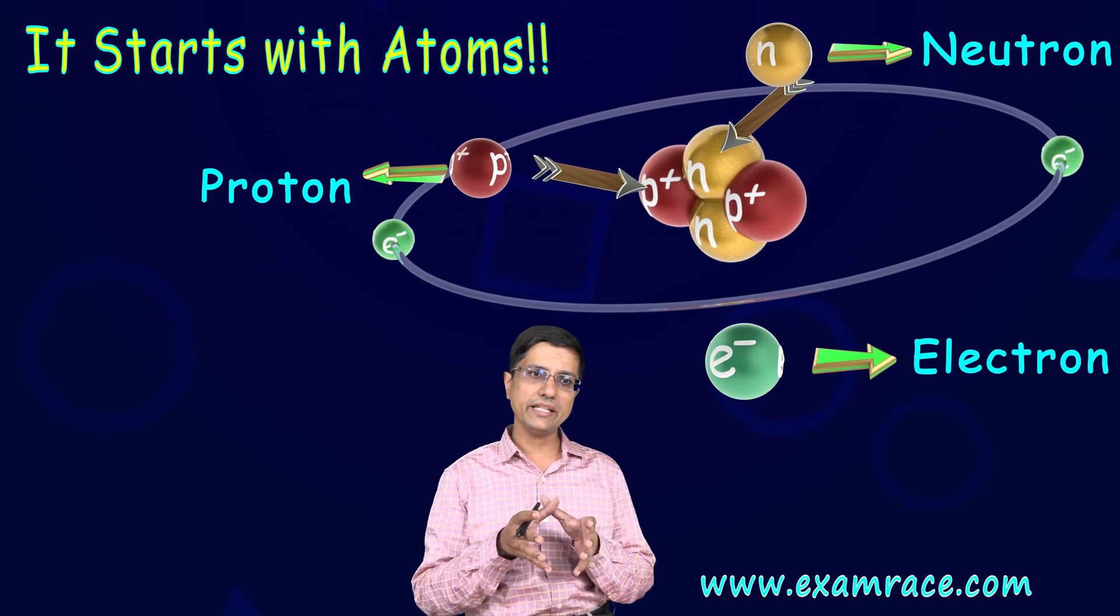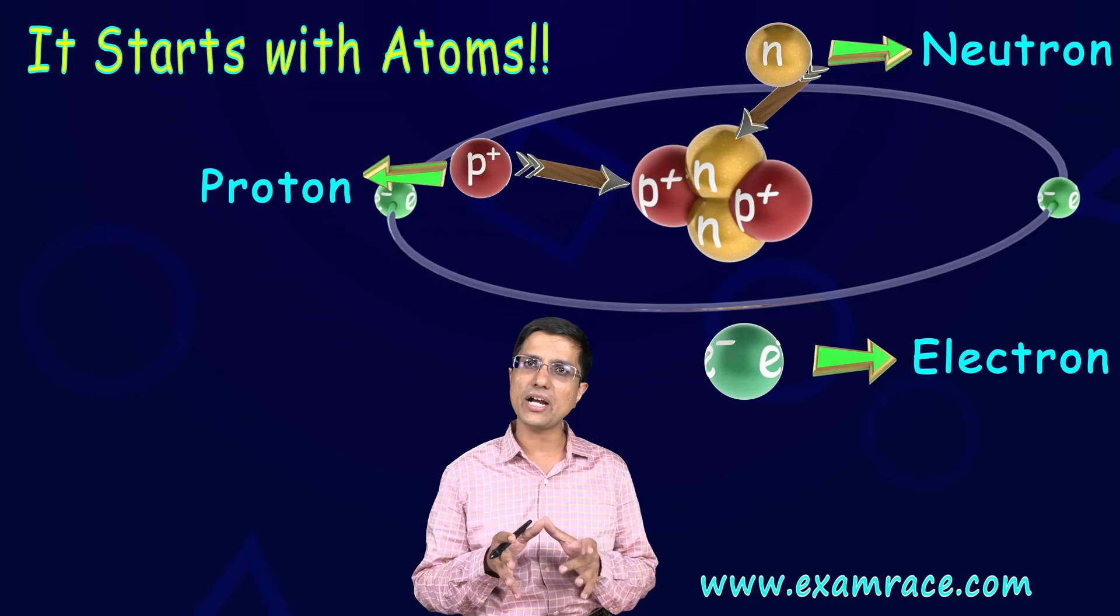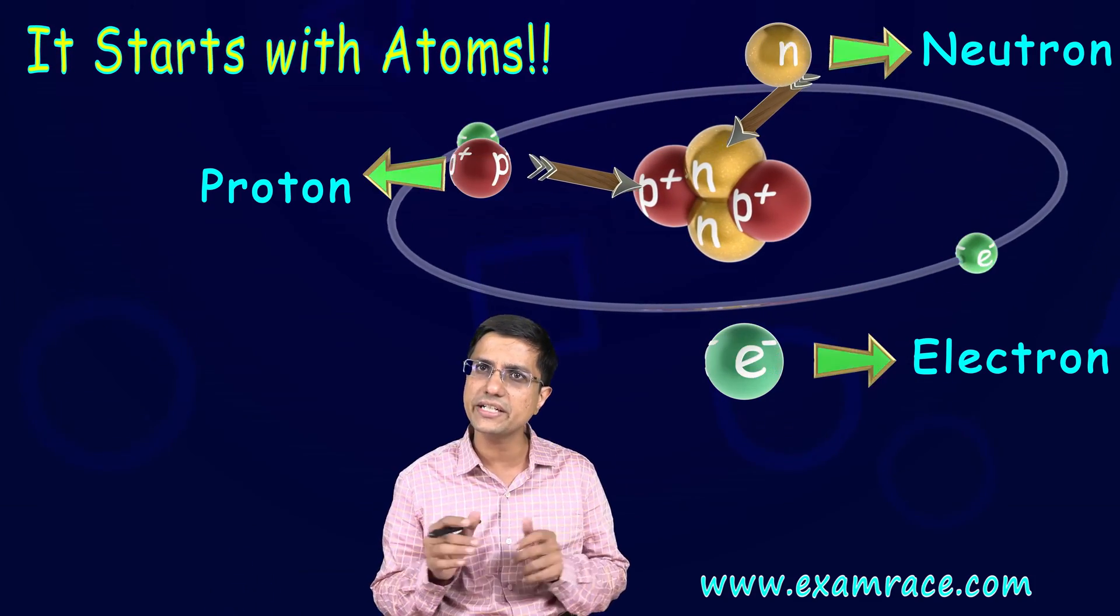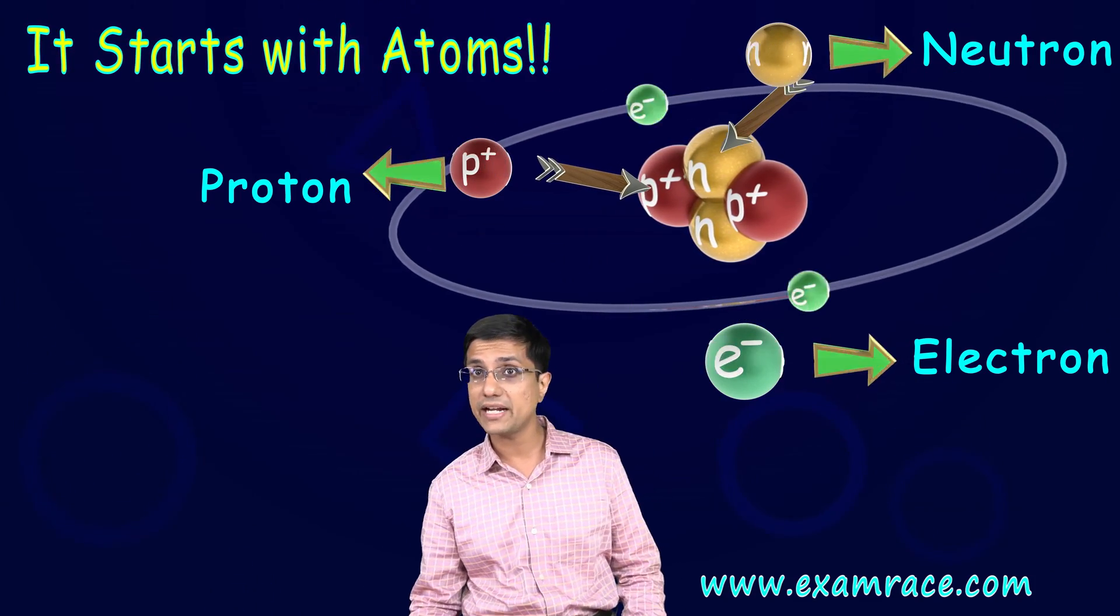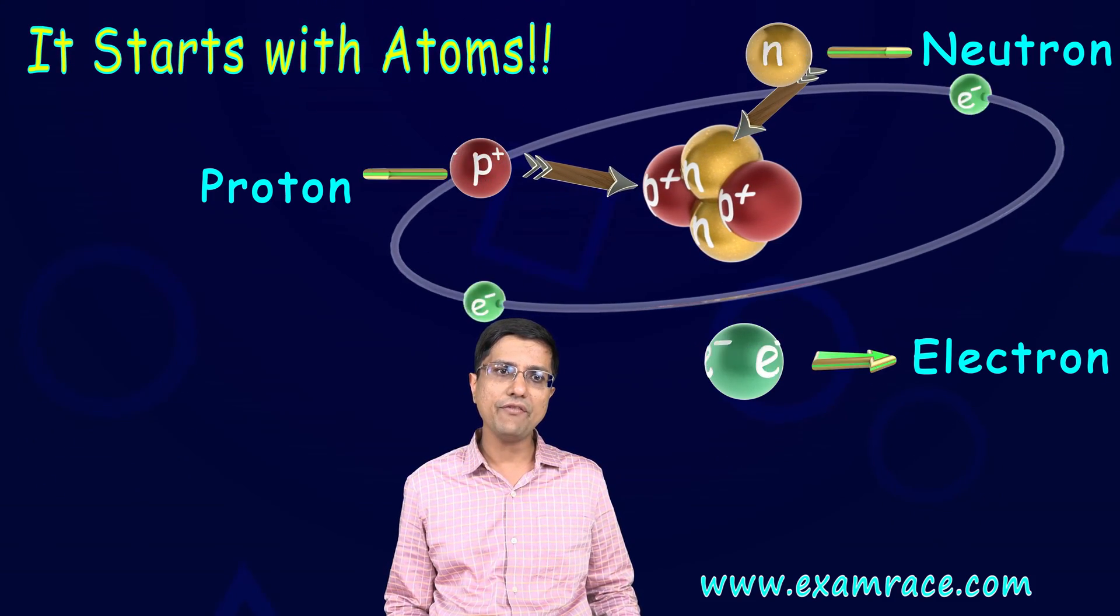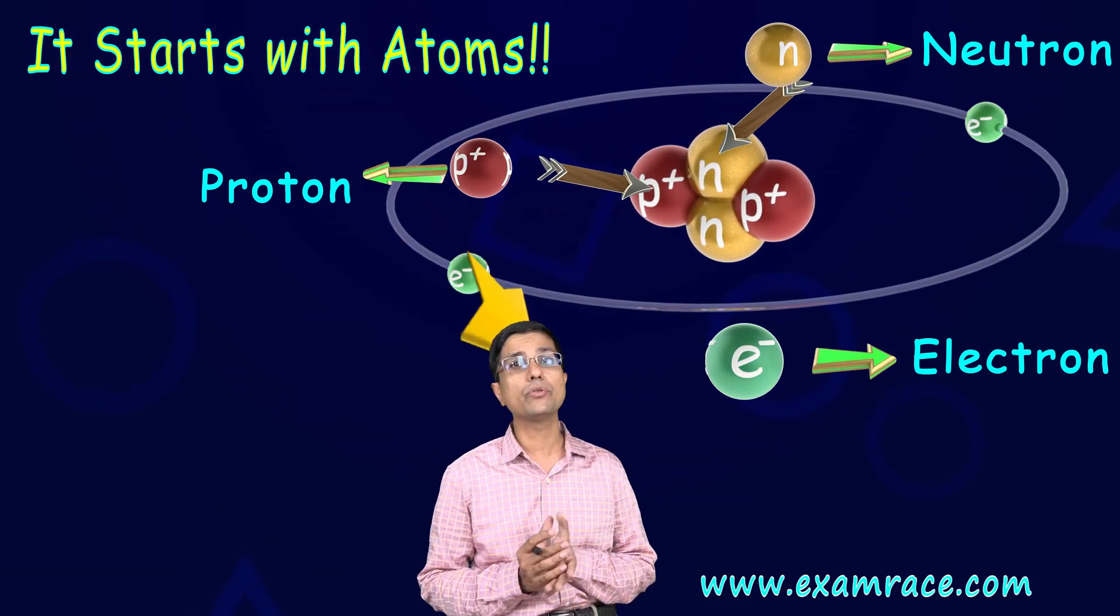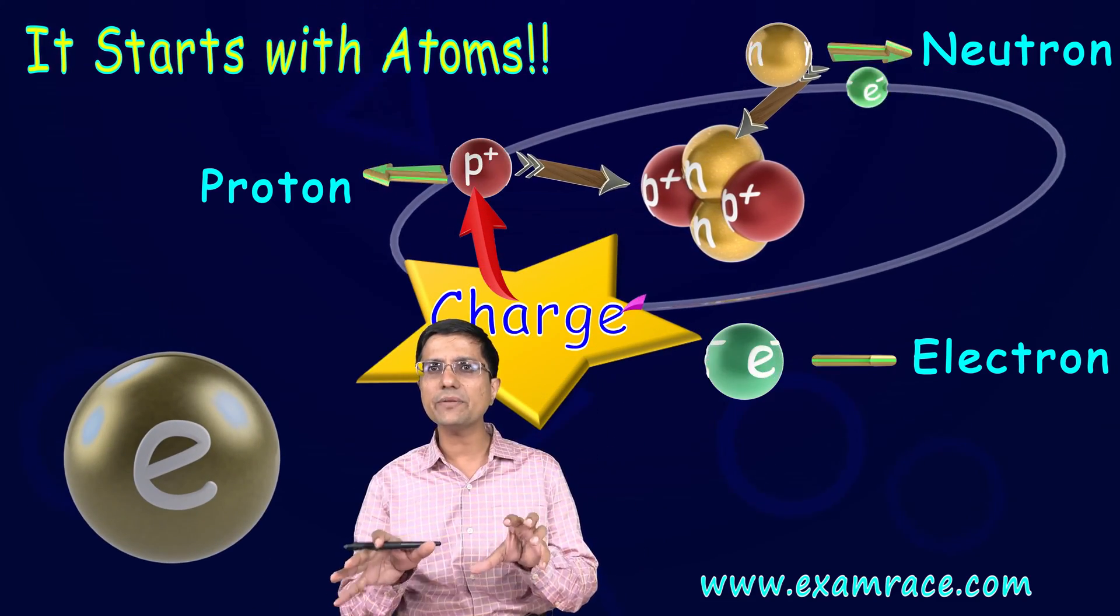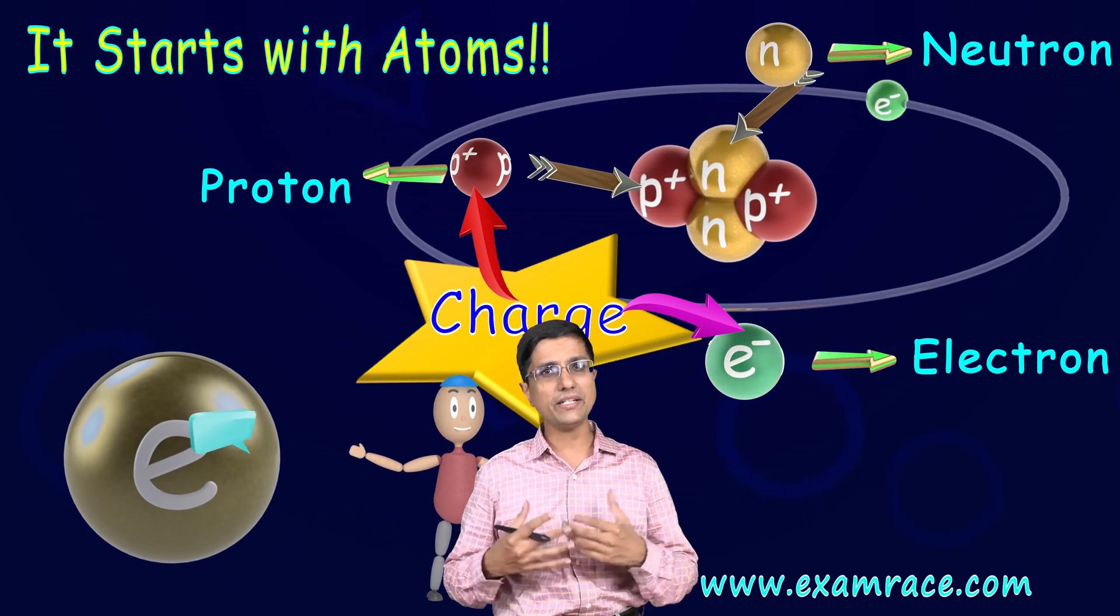If you look at it, the neutrons are not really important from an electricity point of view but protons are indeed important. These electrons and these protons have a very special property which is known as charge. Now it is a very basic intrinsic property just like the mass we have.